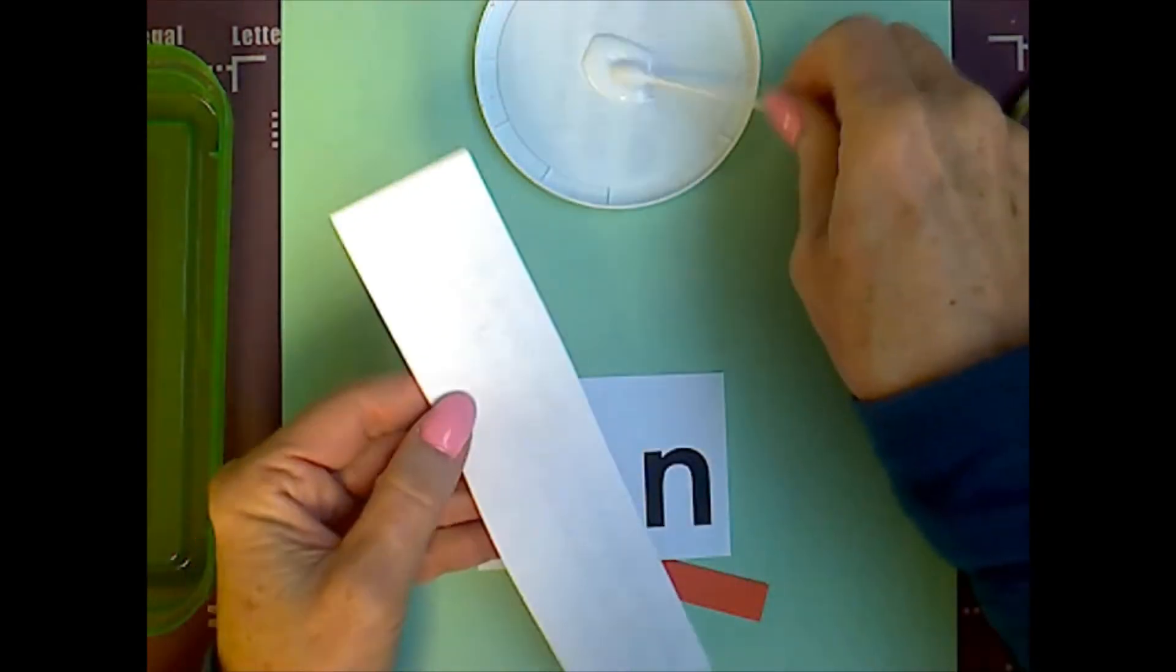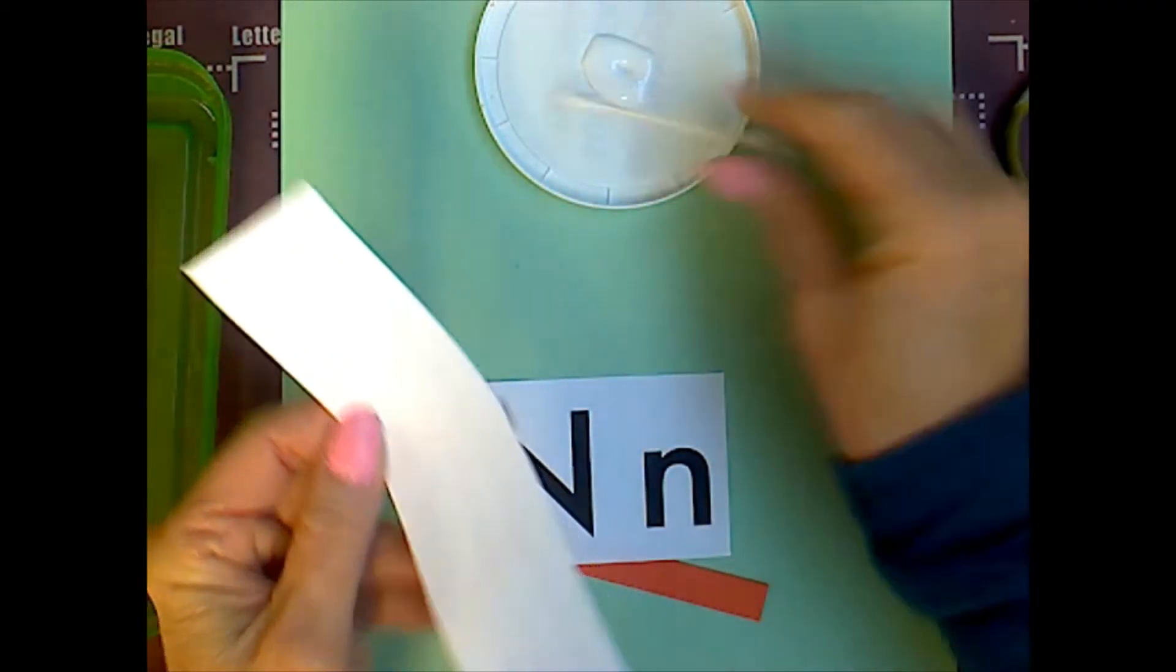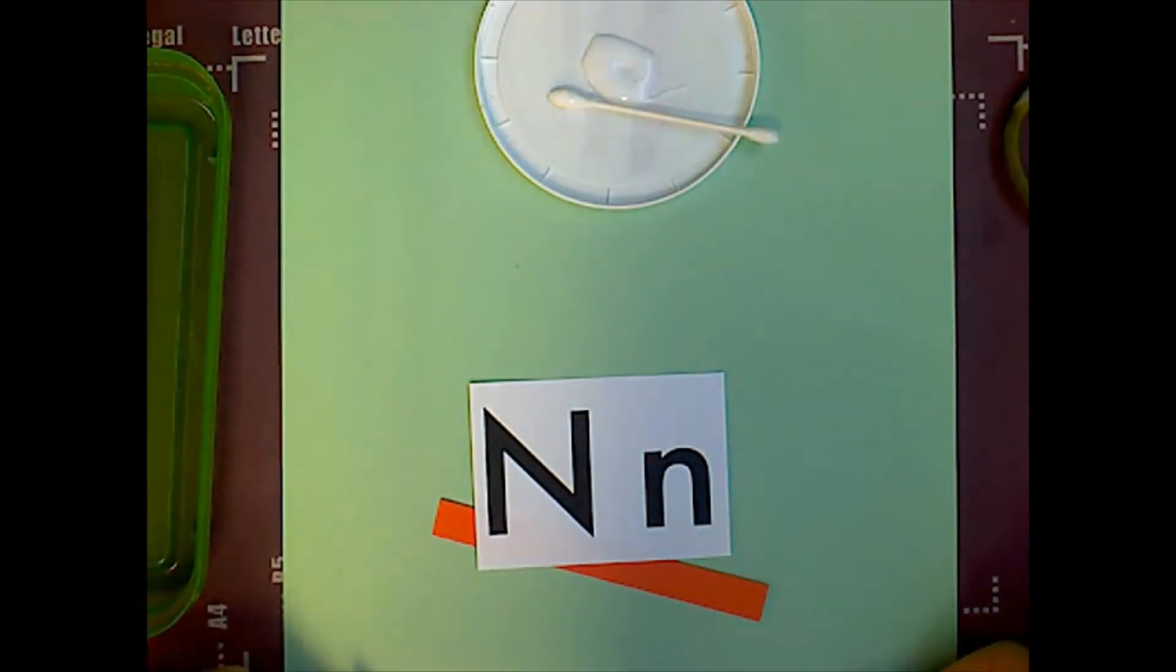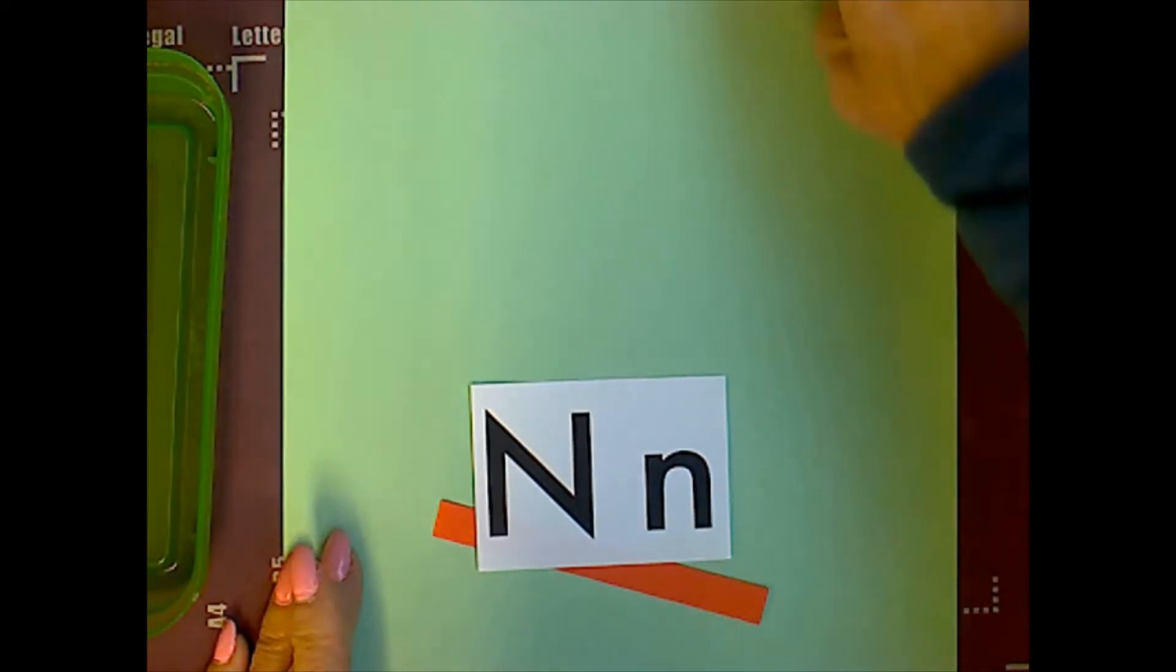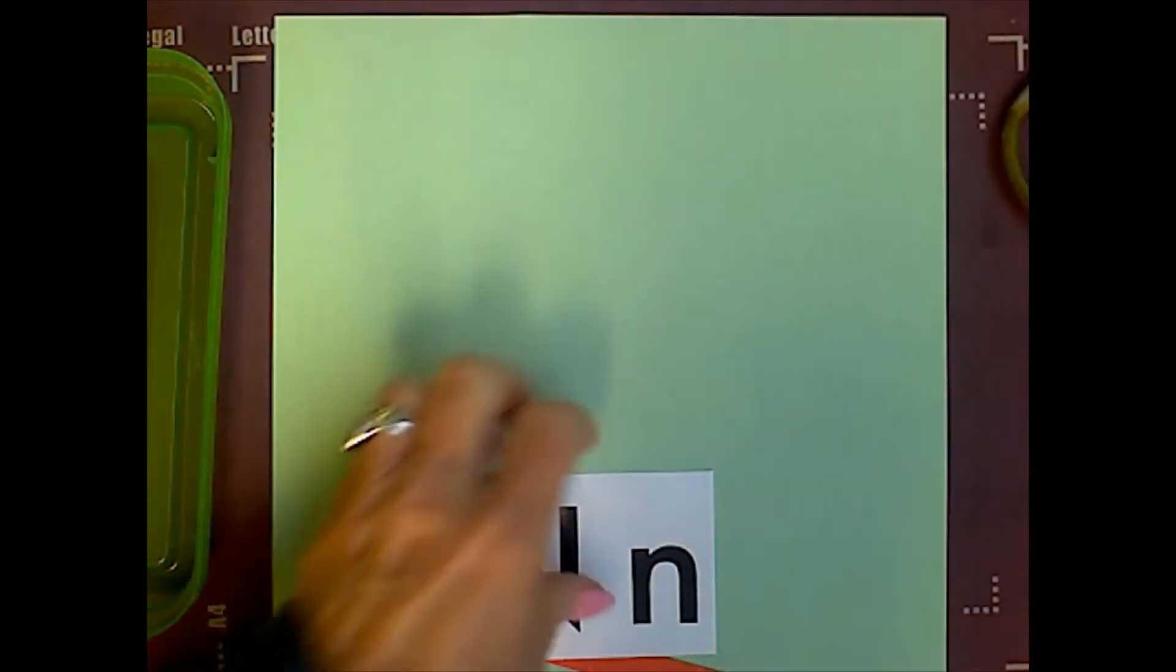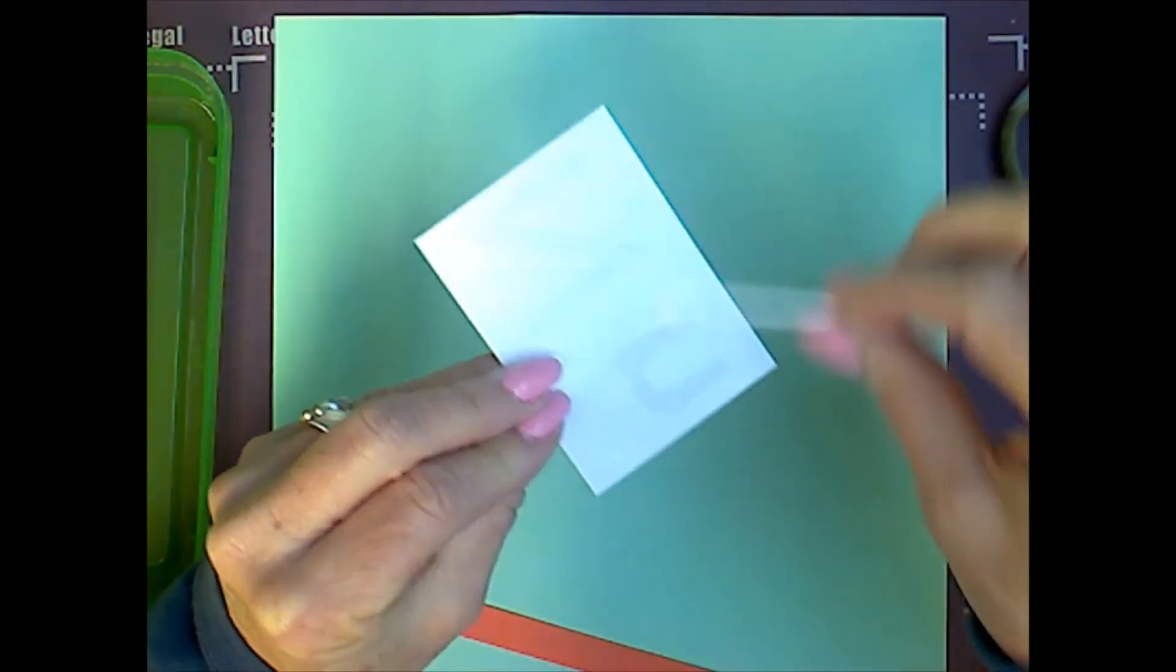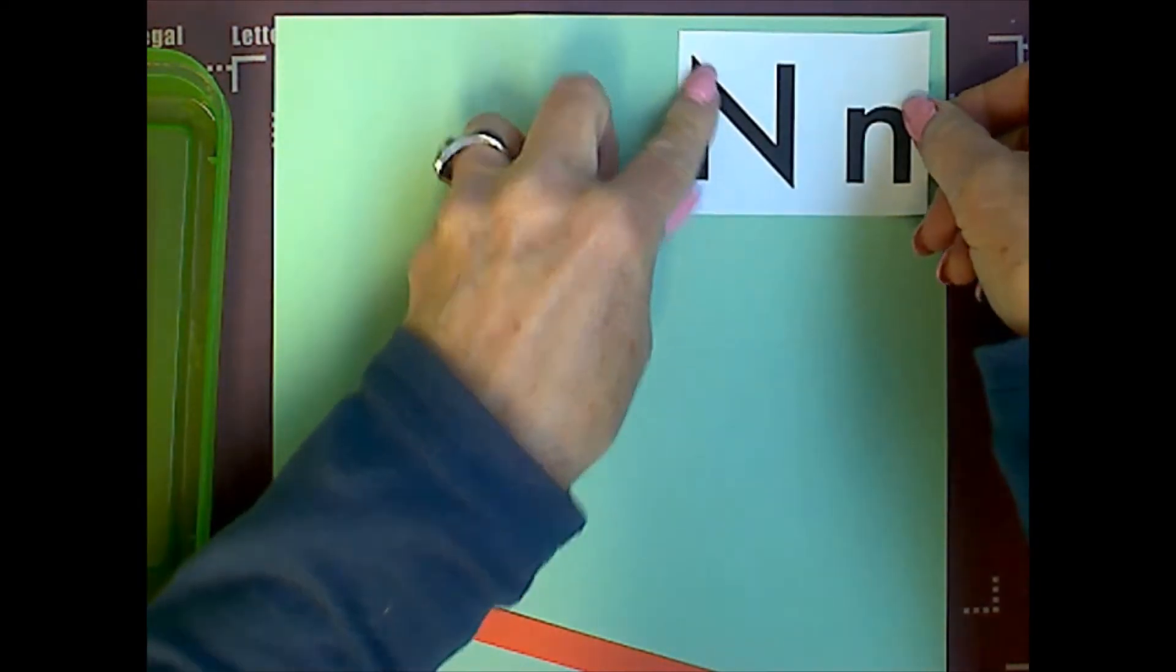You can go ahead and glue this to the bottom of your green paper that should be in the vertical direction. That goes at the bottom. And you can go ahead and glue your N up in the upper right hand corner.